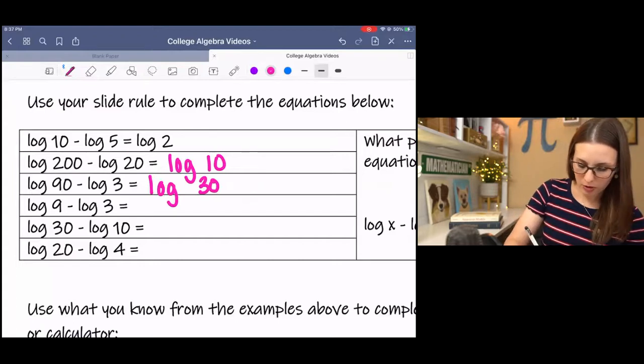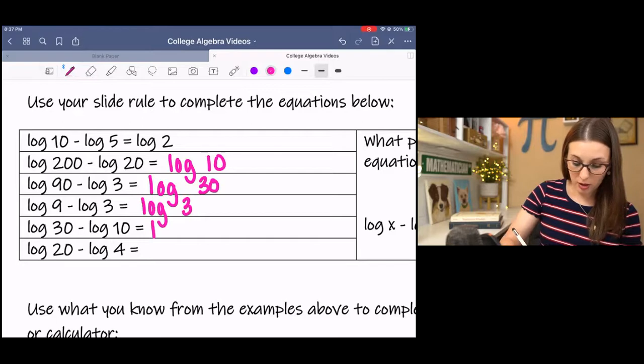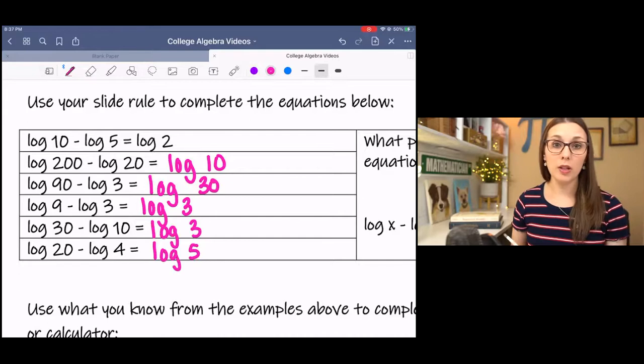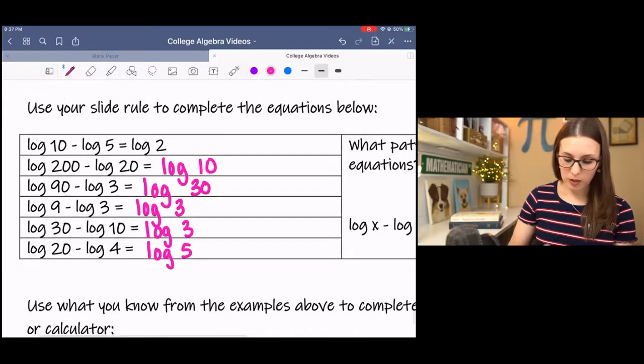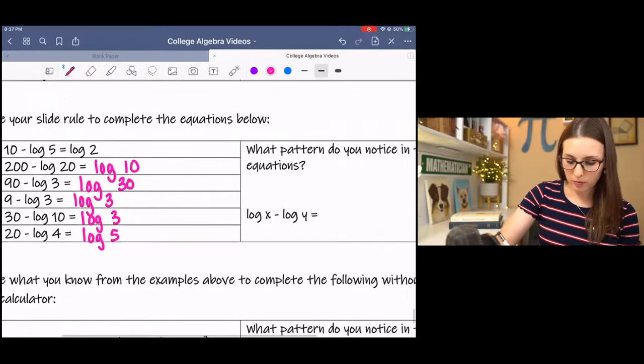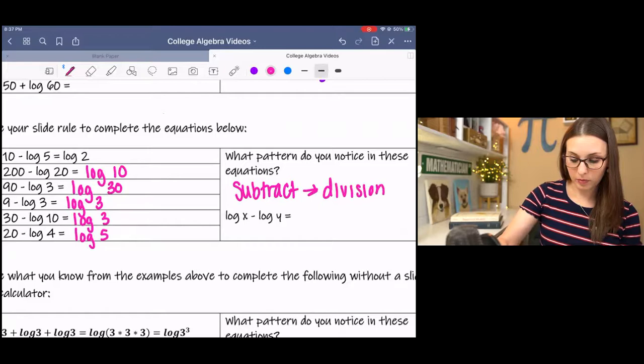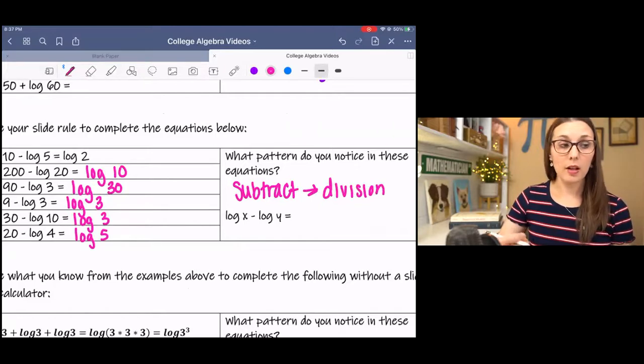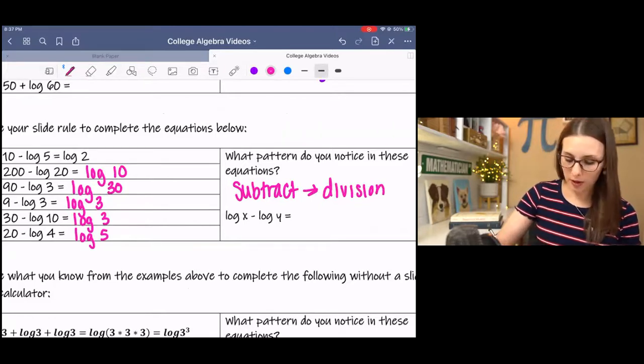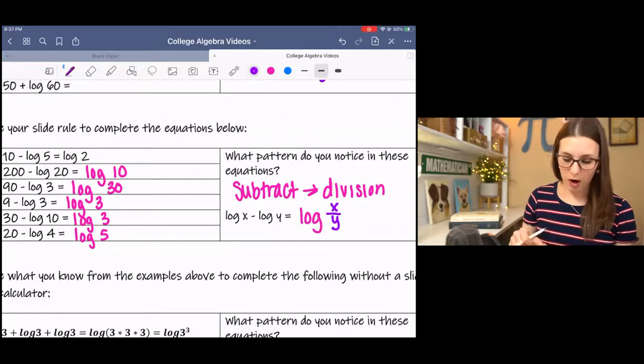Hopefully you found that you get log 3 for the next one, log 3 again for the next one, and log 5 for the last one. What's happening is when we subtract logs, that translates into division. So our rule is log x minus log y. We can consolidate that to log x over y or divided by y.